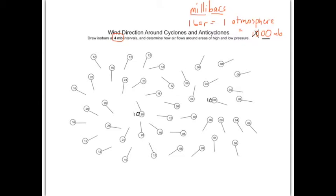I'll explain in a couple minutes what these lines mean, but what we want to do is draw isobars — lines that connect areas of equal pressure. It's almost like connect-the-dots, but you need to do a little interpretation. The highest number aside from the ninety-six is twenty-eight, so the highest pressure is on the left-hand side. I'm going to put a big H there in blue. I'll draw concentric circles connecting weather stations that share that pressure. Everywhere along that line it's the same pressure, and in towards the center it may even be higher.